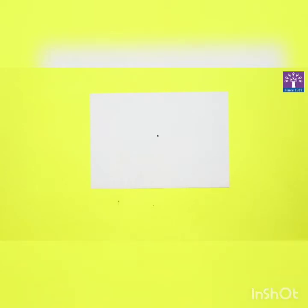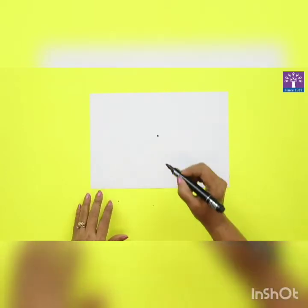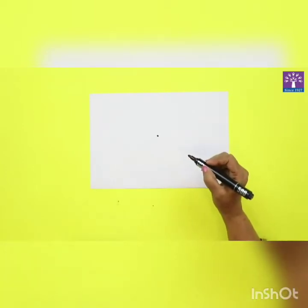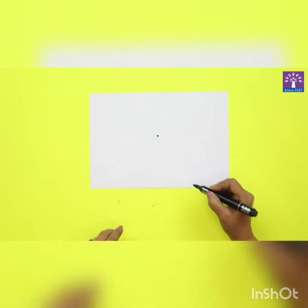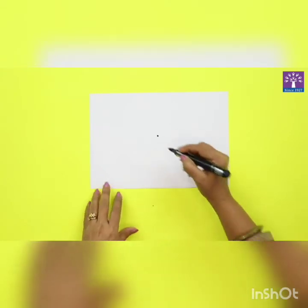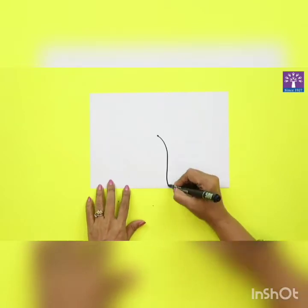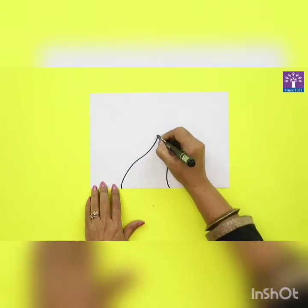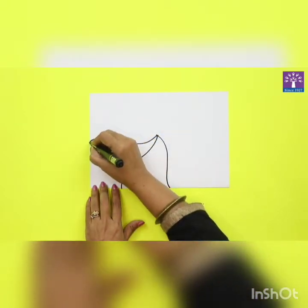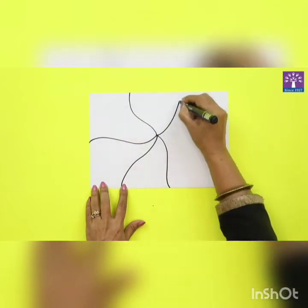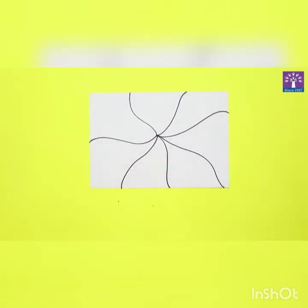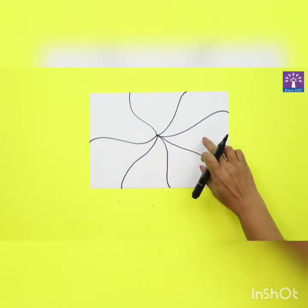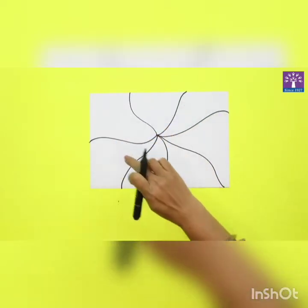Next we'll draw seven uneven lines from the dot till the edge of the page. So here we have seven parts: one, two, three, four, five, six, and seven.